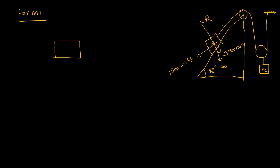m1 — this string is connected with a tension. This is the direction of motion. The blocks are connected to each other. The force of friction acts in the opposite direction to the direction of motion.